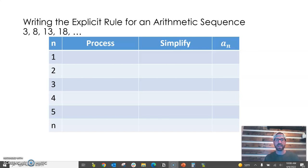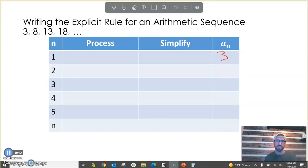So if we look right here, we're writing the explicit rule for an arithmetic sequence 3, 8, 13, 18. So our first term in the sequence is 3, and there's not a lot of math to do there. We start with 3, but then you can see that this number that we're increasing by every time, we're going to call that the common difference, that number is 5.